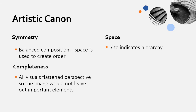Space in Egyptian art also utilizes hierarchy through size. If you want to fill a space with someone important, they will be much larger than everyone else around them, with lots of other people crammed in. You've seen the tomb painting of Nebamun hunting in the marshes — his kid is underneath him, his wife is crammed in behind him, and they're smaller and therefore less important than he is.